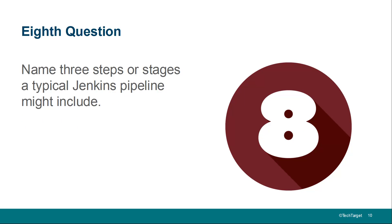Question number eight: name three steps or stages a typical Jenkins pipeline might include. A typical Jenkins pipeline would probably include build, test, and deploy. Use Maven to build the project, run your project through a variety of bug tests, static code analysis, maybe some performance testing, and then finally deploy it — maybe to a Tomcat server, a Docker container, or even a Nexus Maven repository. You can break it down further with environment validation, user acceptance testing, or deployment to alternate servers, but build, test, and deploy are probably the most important ones.